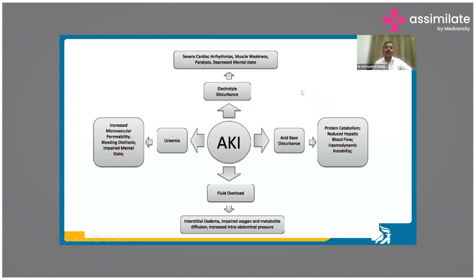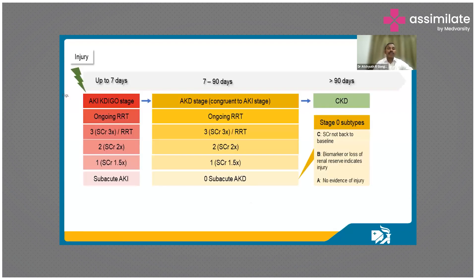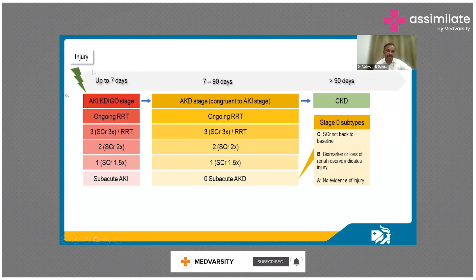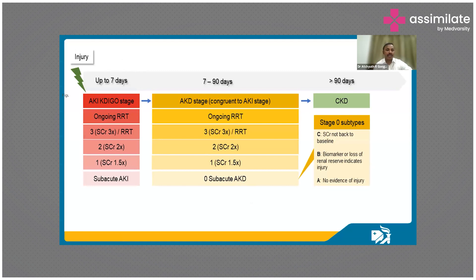You see all sorts of pathophysiological changes in acute kidney injury. One more thing to remember is that acute kidney injury is labelled AKI for the first 7 days. Once it subsists beyond 7 days, the label changes to acute kidney disease, AKD. And if it subsists for more than 90 days, from acute you call it chronic. So the label changes: AKI, then AKD, then CKD.